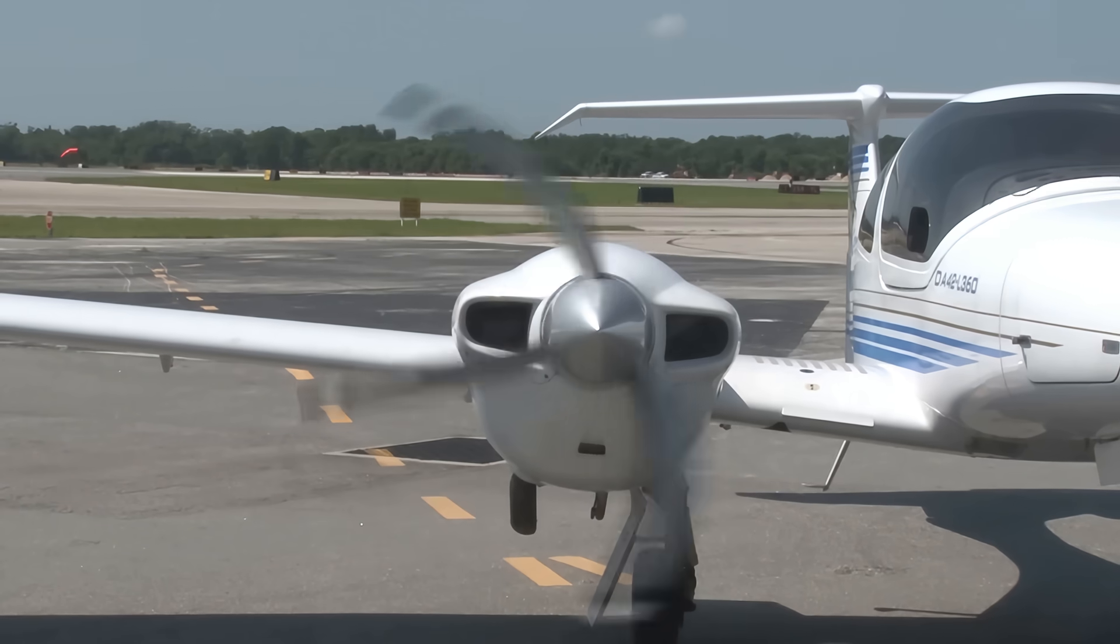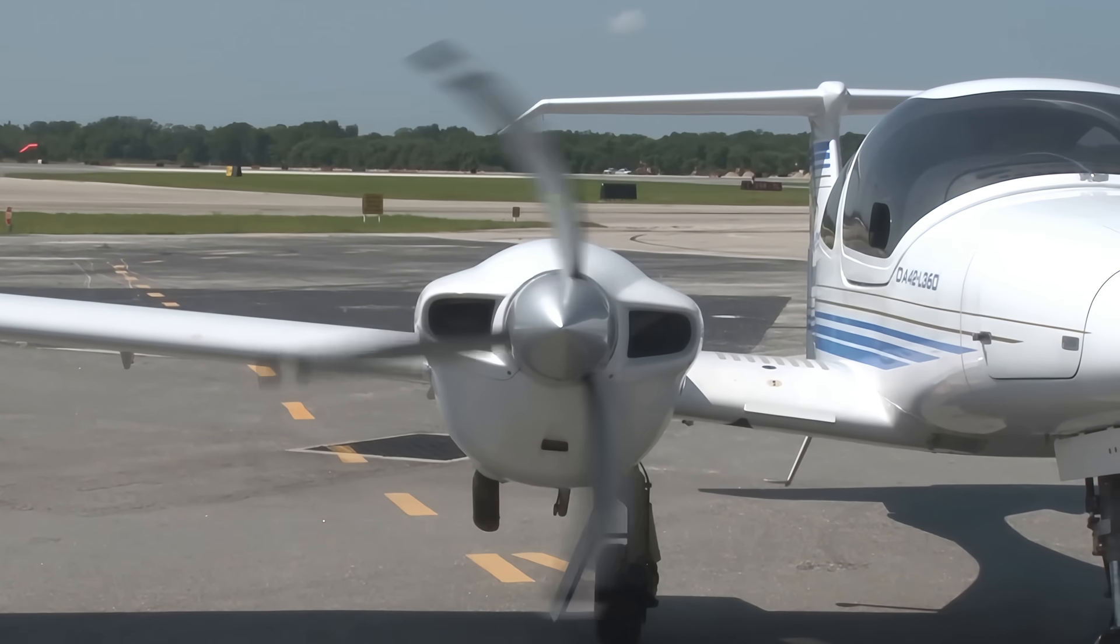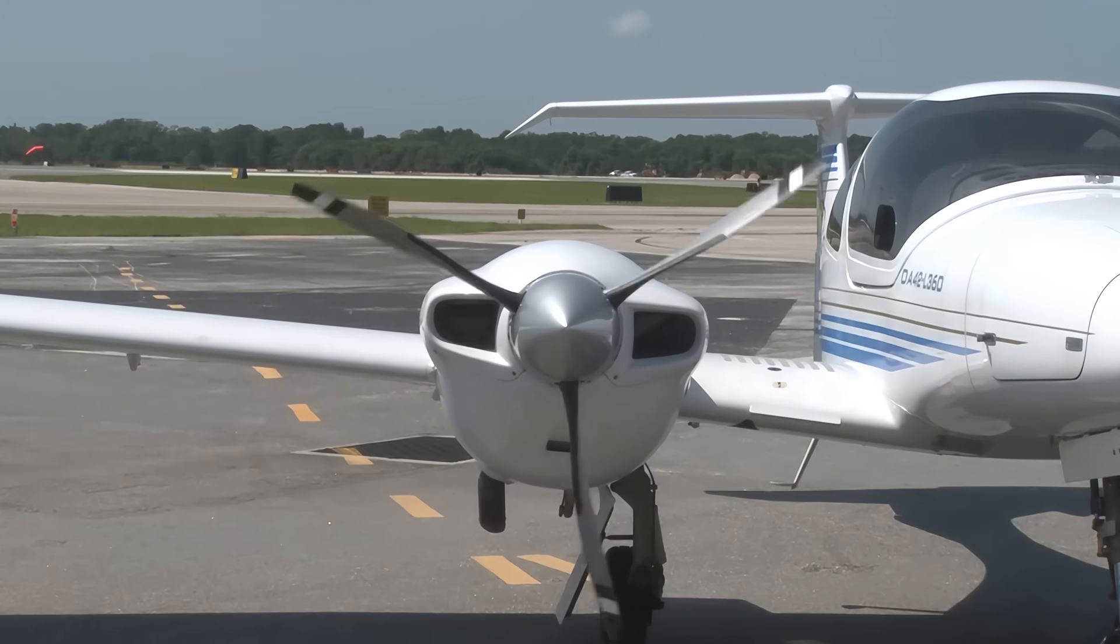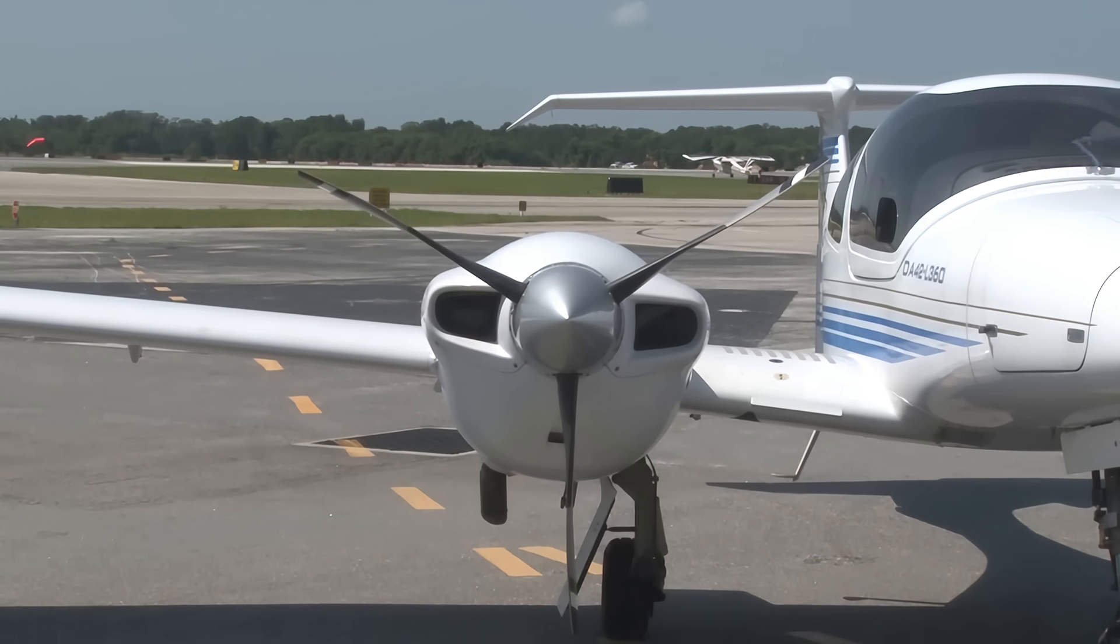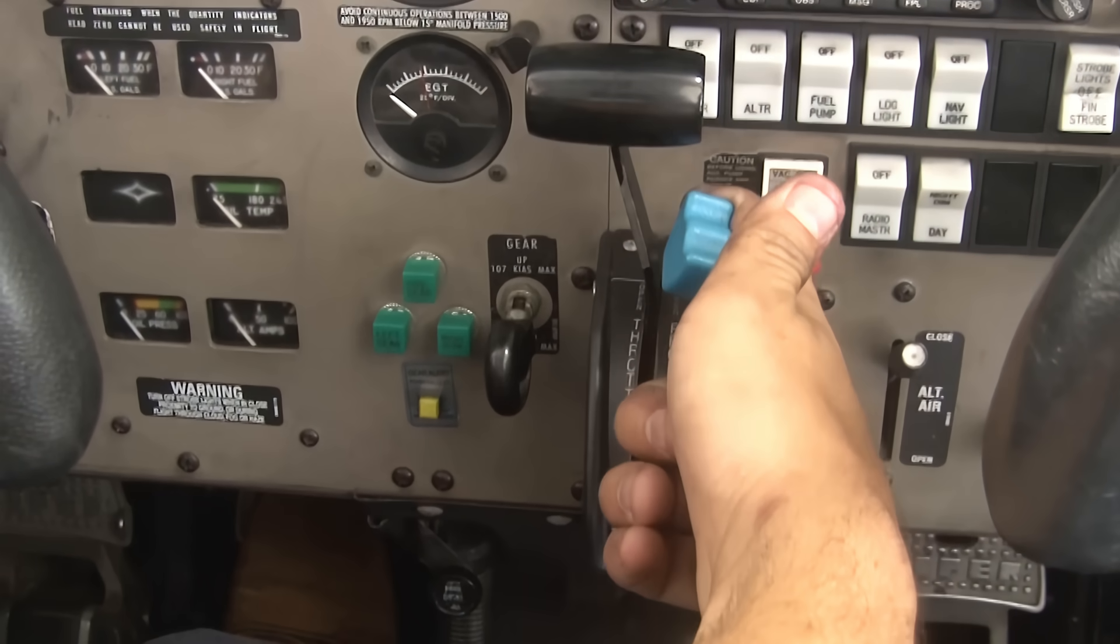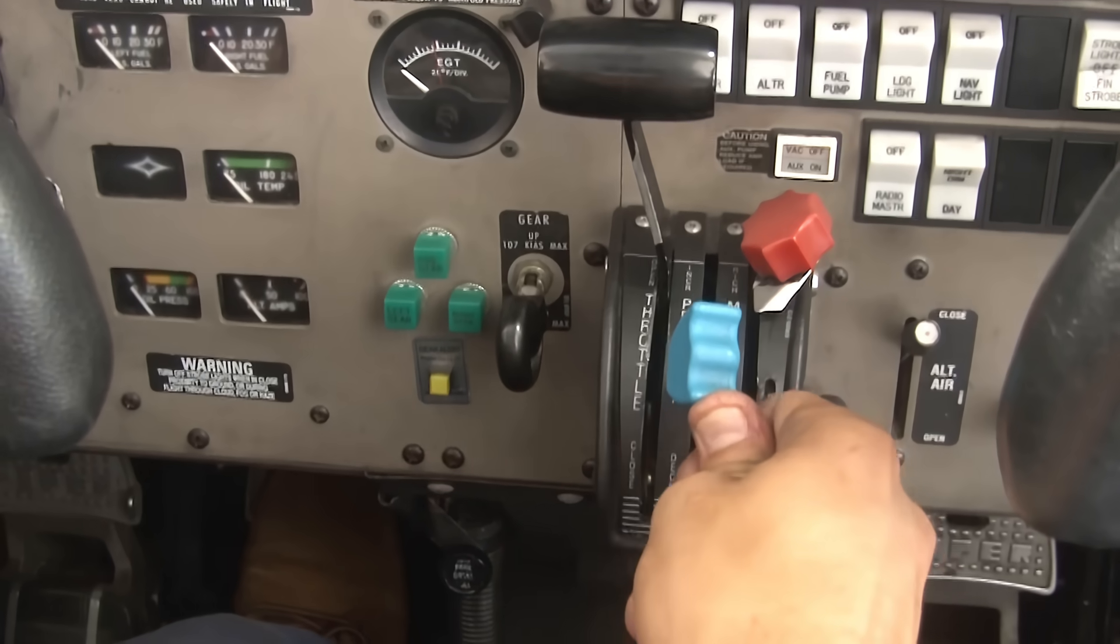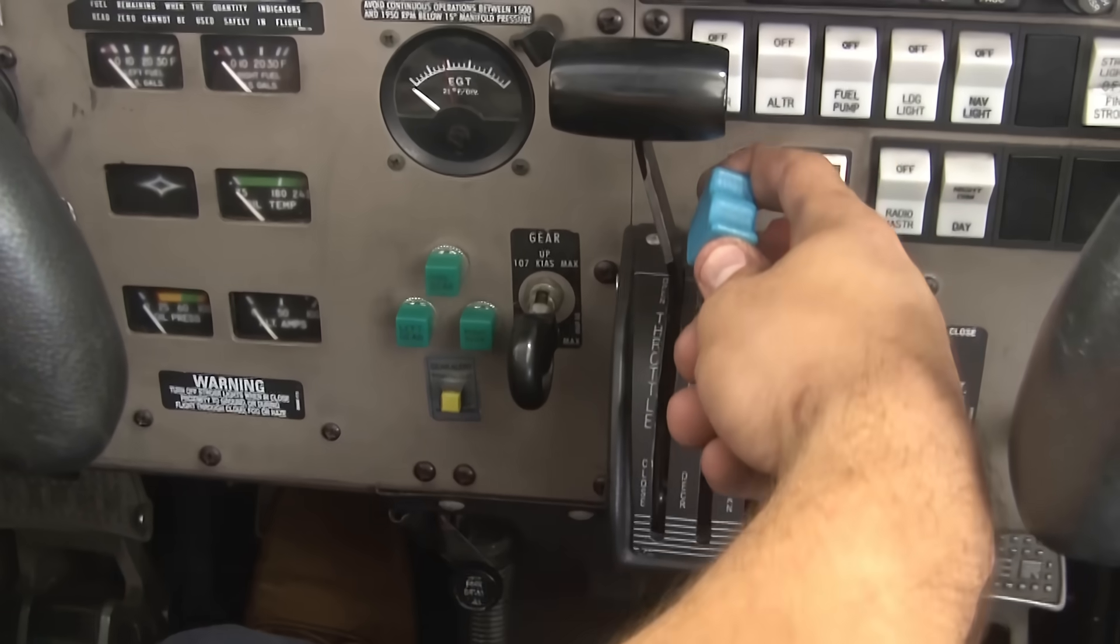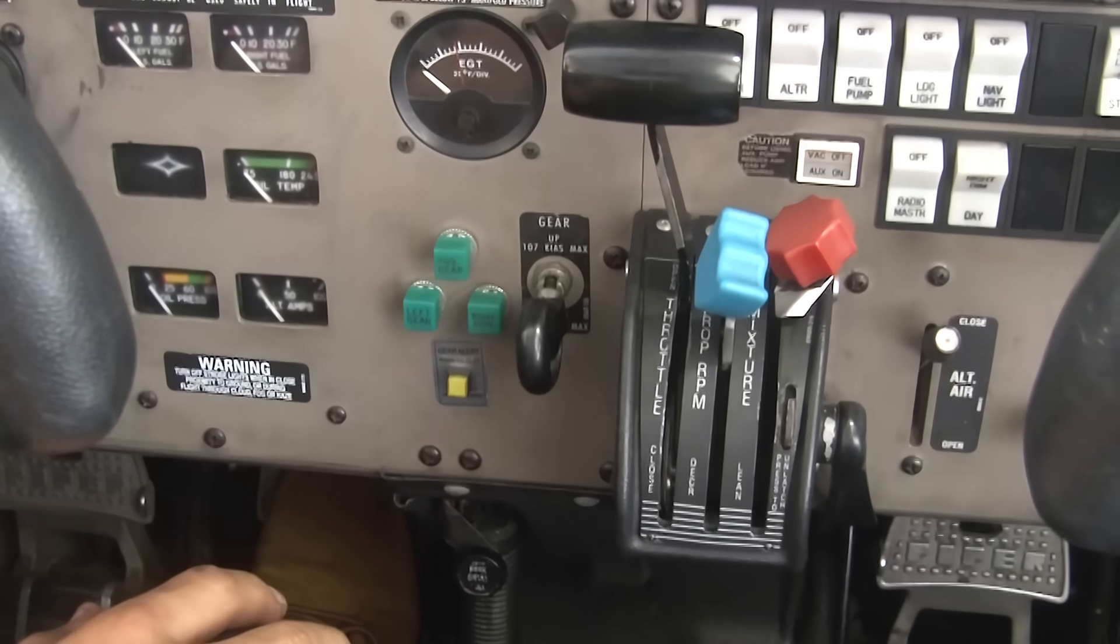A constant-speed propeller, such as the one on the Diamond DA42, is more efficient than a fixed-pitch propeller. With a constant-speed propeller, the pilot can adjust the blade angle of the propeller to obtain maximum performance for different conditions of flight. Airplanes with a constant-speed propeller are not only equipped with a throttle, which still controls the power created by the engine, but they are also equipped with a propeller control. This control, which is usually blue in color, allows the pilot to change the RPM of the propeller instead of just based on the engine's output.